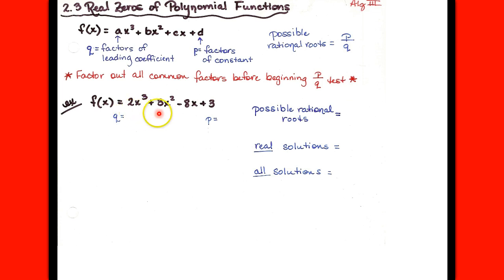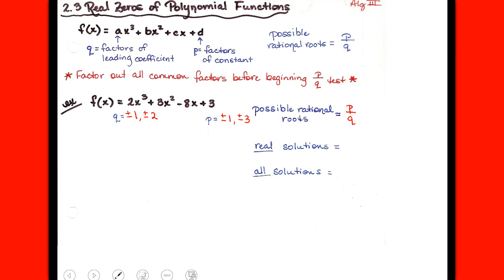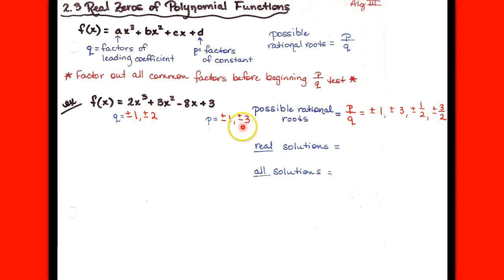Looking at our cubic, I don't have any common factors to take out. So let's find all the factors of p. p is 3, so we have plus or minus 1 and plus or minus 3. Then the factors of q — q is our leading coefficient, that's 2 — gives us plus or minus 1 and plus or minus 2. Putting every possible combination of p over q, we get plus or minus 1, plus or minus 3, plus or minus 1/2, and plus or minus 3/2. That gives us 8 possibilities.